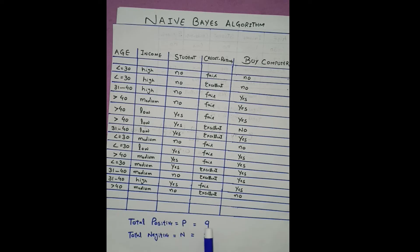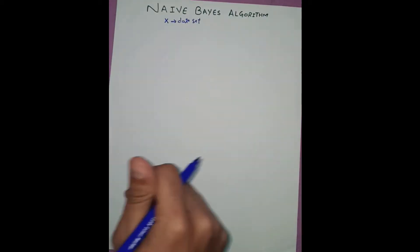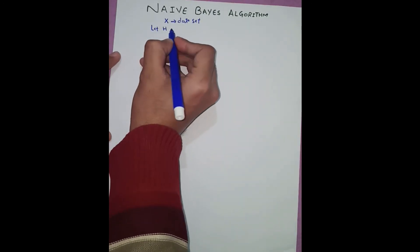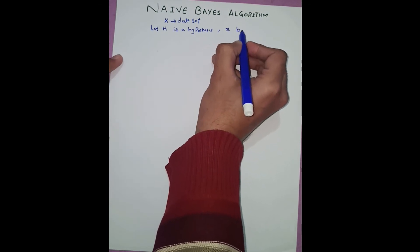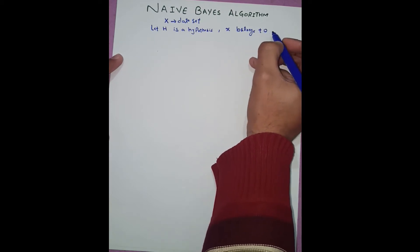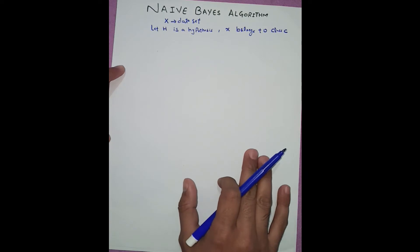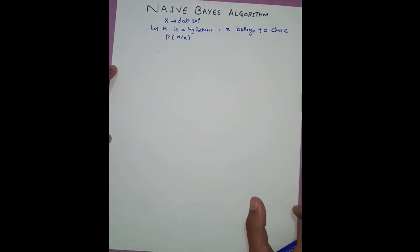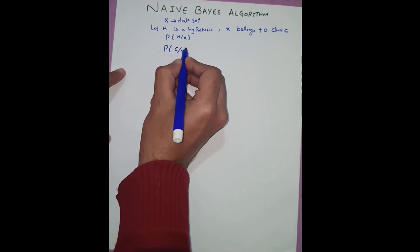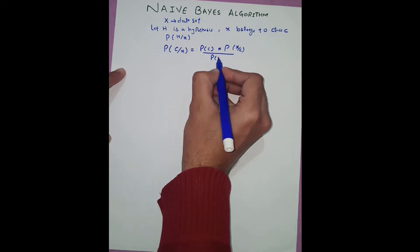We are interested in 'buys computer = yes', so our positive case equals nine. In Naive Bayes, let H be a hypothesis that X belongs to class C. Classification is determined in Naive Bayes as P(H|X) — the probability that hypothesis holds given observed data X. The overall Naive Bayes formula is: P(C|X) = P(C) × P(X|C) / P(X).